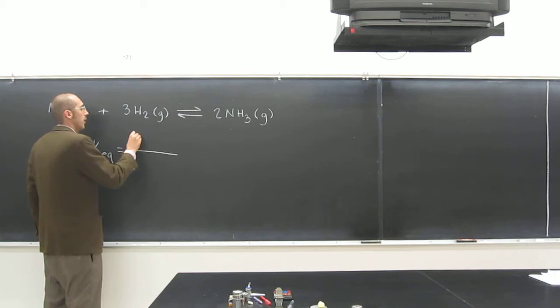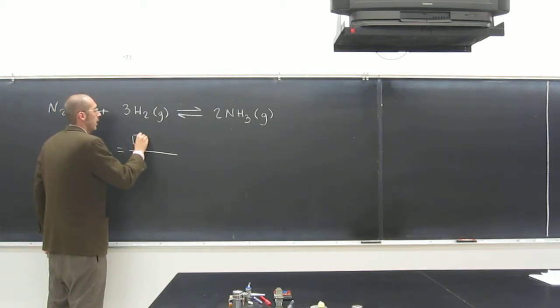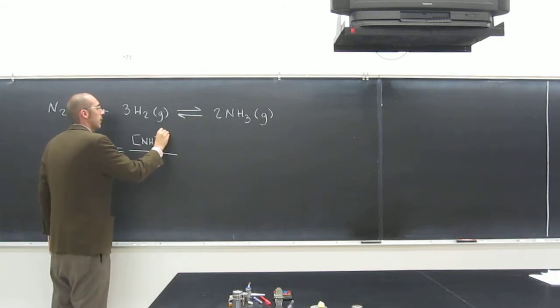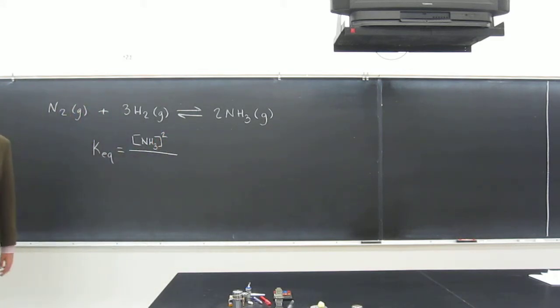So here on the product side, we've got one gas, ammonia, or NH3, and it's going to be raised to the second power there. So it's going to be squared.